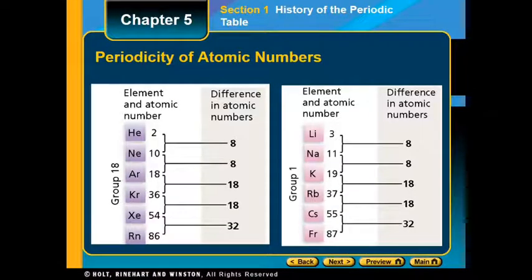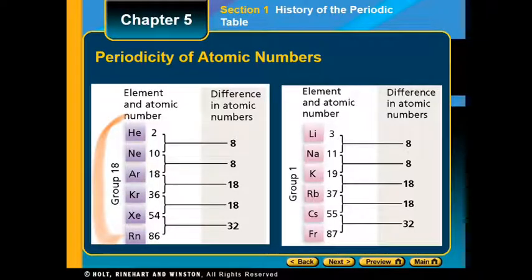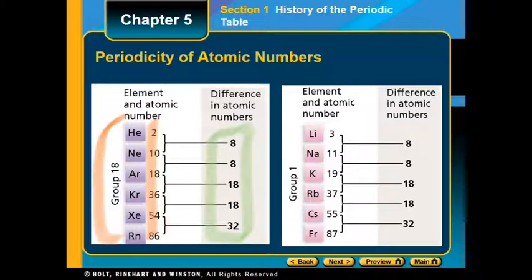We're going to look at periodicity. Write both of these in your notes. We are looking at group 18 to start — the elements within group 18 are helium through radon. There are their atomic numbers. If you find the difference — meaning subtract — in the atomic numbers, there is a pattern: 8, 8, 18, 18, 32. You will find that this pattern, or even parts of it, repeat throughout the entire periodic table.